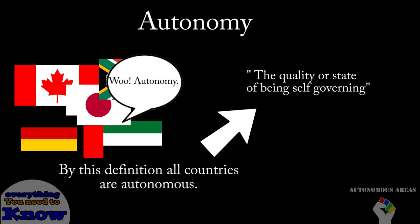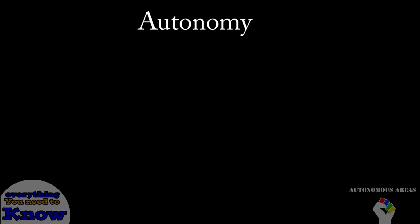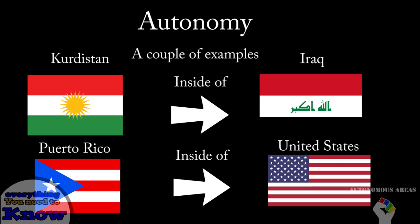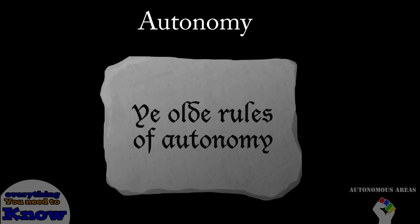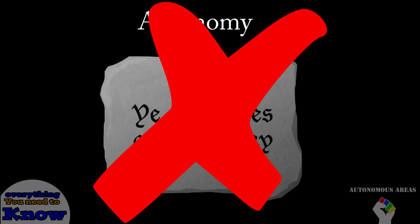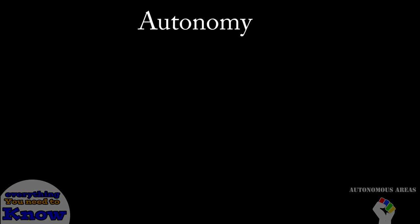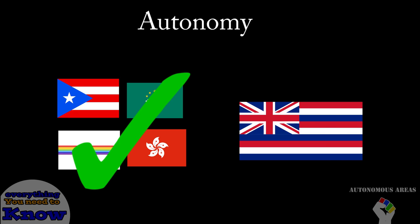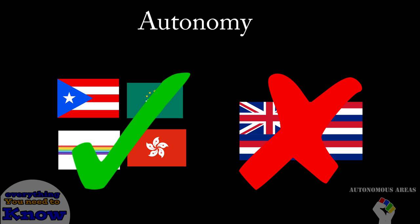But today we are looking at autonomous areas which are areas inside of countries that have a degree of self-governance. Now there is no set in stone definition as to how much autonomy an area has to have to call it autonomous, but we will be looking at several examples of autonomous and non-autonomous areas and seeing why they are the former or the latter.